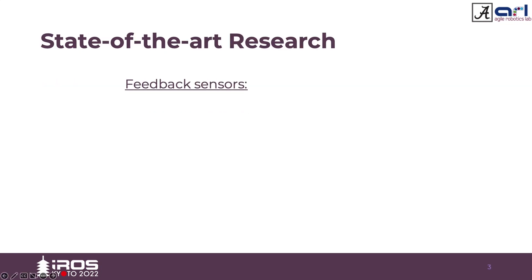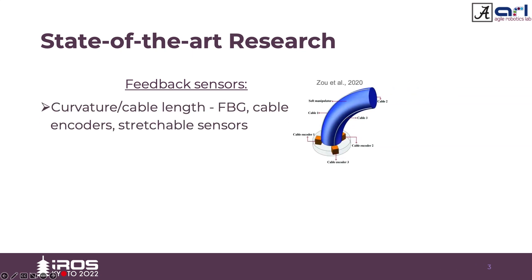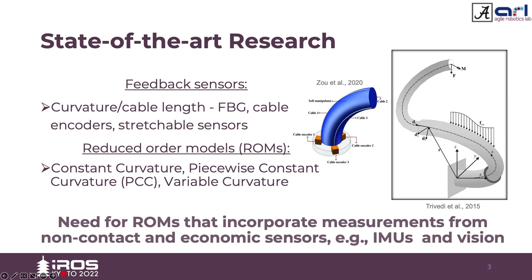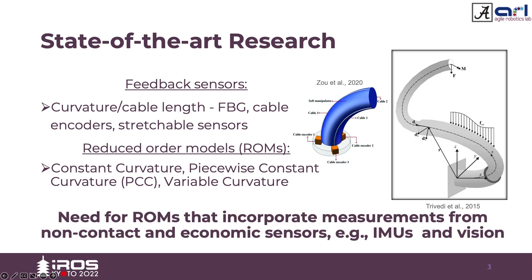Shape reconstruction is possible using measurements from various sensors. These include fiber Bragg gratings, cable encoders, and stretchable sensors that measure the length of the manipulator. These readings are used to form various reduced order models. Most models assume constant curvature, piecewise constant curvature, or variable curvature approaches.